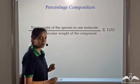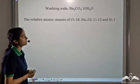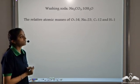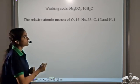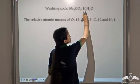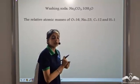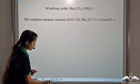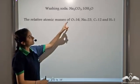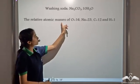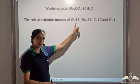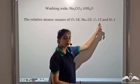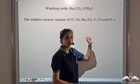Now let's calculate. We are given the formula of washing soda which is Na2CO3·10H2O. This 10H2O is the water of crystallization present in the washing soda. We are given that the relative atomic mass of oxygen is 16, sodium is 23, carbon is 12, and hydrogen is 1.